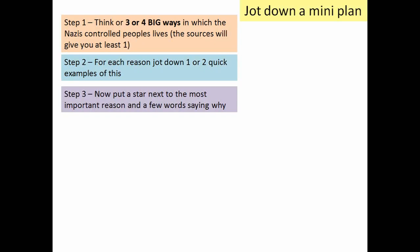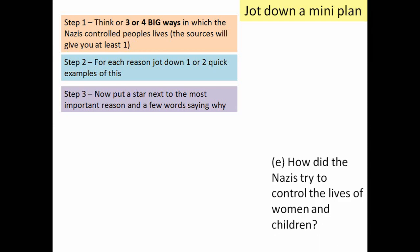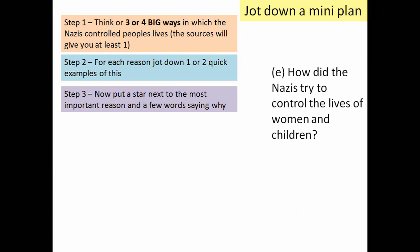You're going to use a similar technique to the one you used in the mock for the 1e question, which is the other essay question. The first thing to do is very quickly jot down a plan. Think of three — maybe four, but three is probably enough — big ways. In the case of the mock, it was the ways in which the Nazis controlled the lives of people. Then add a couple of quick examples for each, and a little star showing which one you think is the most important.